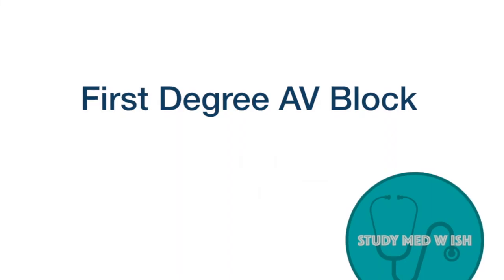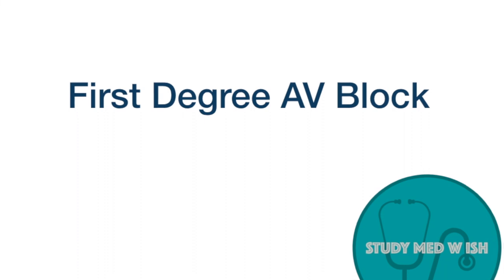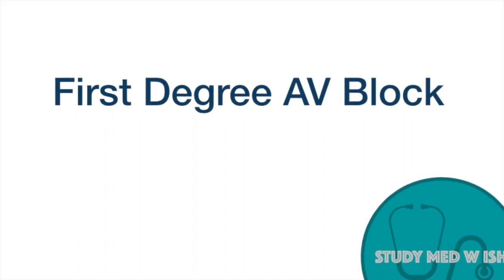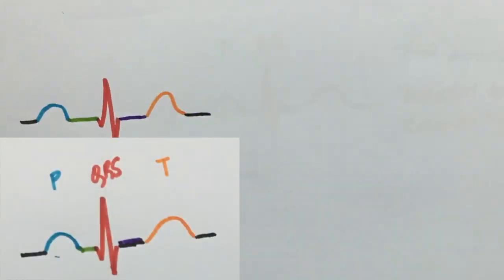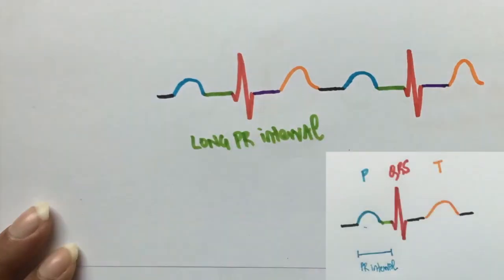AV block suggests that something's up with the AV node. So that should remind you that there's a problem with the PR interval. In a patient with first-degree AV block, the P wave will be normal and so will the other waves. But the PR interval will be longer than usual. Note that the PR intervals and all the heartbeats are equal in duration. These patients are usually asymptomatic.